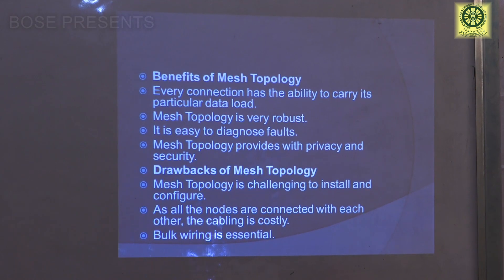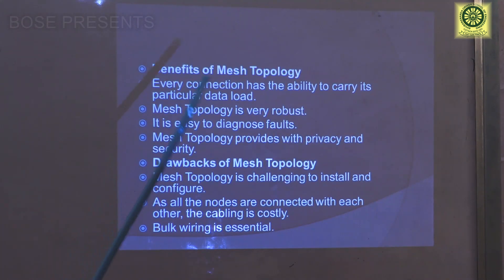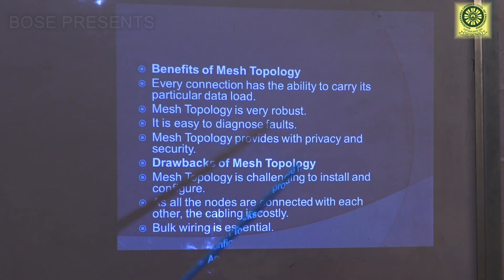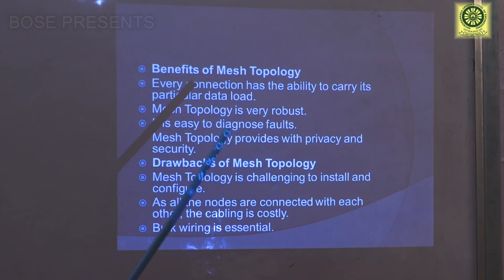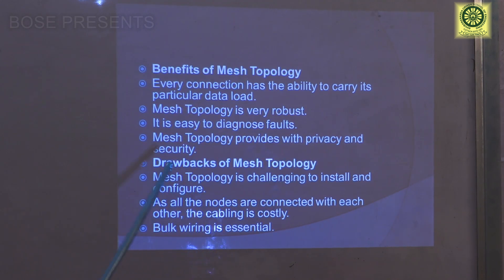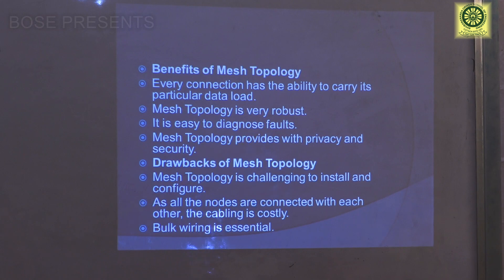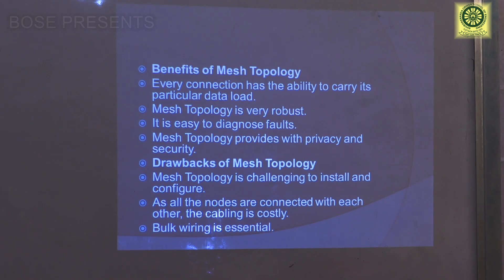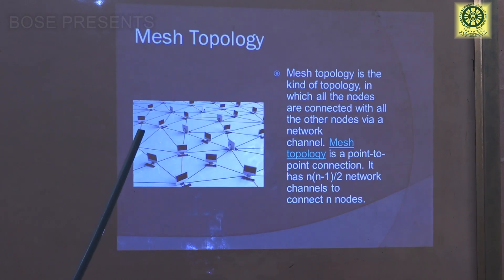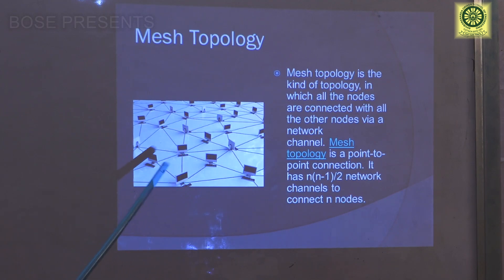The benefits of mesh topology: every connection has the ability to carry data, and it is very robust. It is easy to maintain and diagnose, fault tolerance is very good, and mesh topology provides privacy and security. The drawbacks: mesh topology is challenging to install and configure, as all nodes are connected to every other node. Cabling must be done correctly; otherwise the connection will fail.